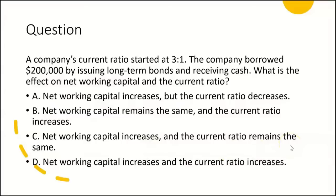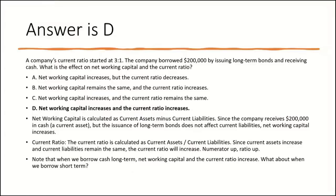It must be D: net working capital increases and the current ratio increases. Net working capital is calculated as current assets minus current liabilities. Since the company is receiving $200,000 in cash — a current asset — current assets go up. But the issuance of long-term bonds does not affect current liabilities, so net working capital increases. As for the current ratio — current assets divided by current liabilities — since current assets increase and current liabilities remain the same, the current ratio increases because the numerator is going up.